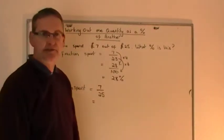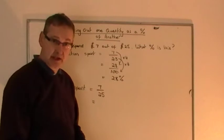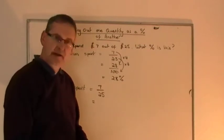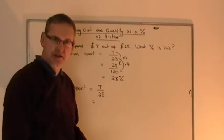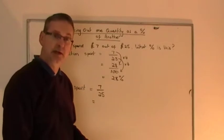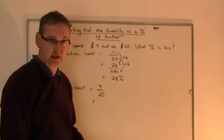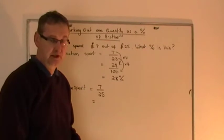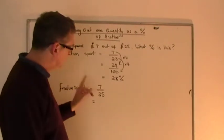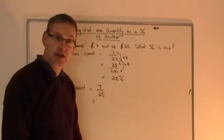Now 7 25ths is a fraction. You know yourself, or I hope you know already, that fractions, decimals and percentages are three ways of expressing the same quantity. So for example, a half is the same as 0.5, is the same as 50%. They are the same thing. So all I'm going to do is change that to the percentage which is the same as it.